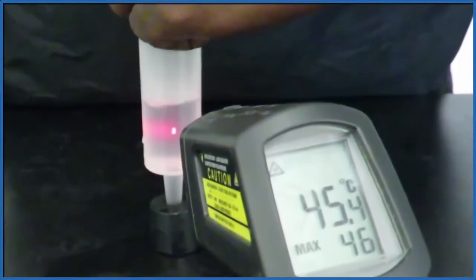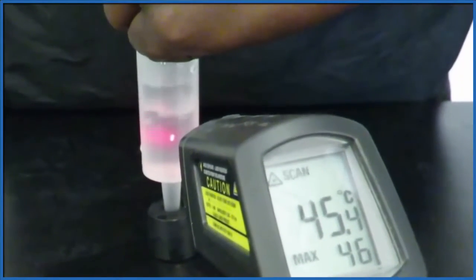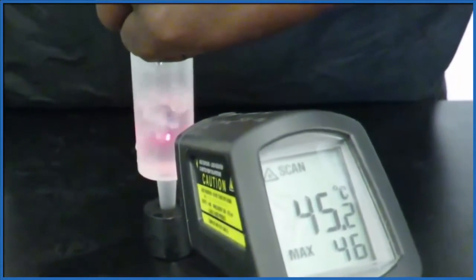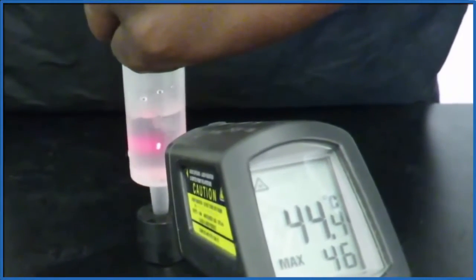If we pull the plunger out and decrease the pressure enough, water will start boiling. Note that the temperature doesn't change. It doesn't get hotter when it boils. It's just that there's low pressure, the molecules can spread out to form bubbles, and that's what we see happening here.